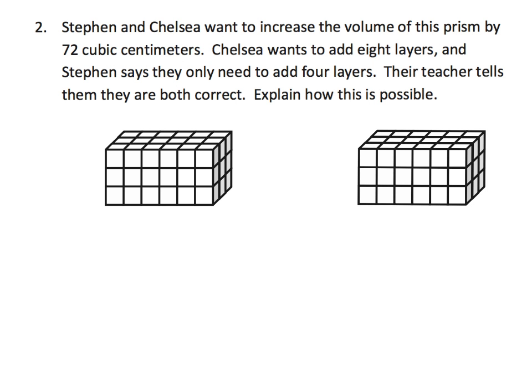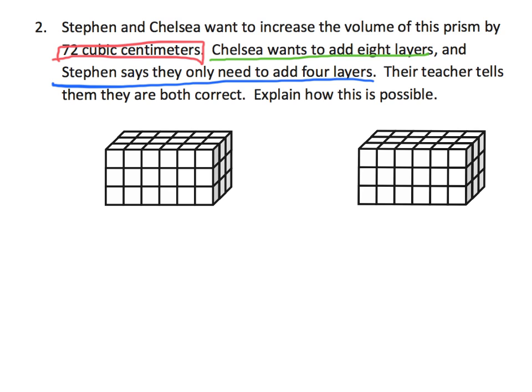On this one, Stephen and Chelsea want to increase the volume of this prism by 72 cubic centimeters. Chelsea wants to add eight layers. Stephen says they only need four layers. We have a little bit of a controversy here — four layers for Stephen and eight layers for Chelsea. But their teacher, surprisingly, says that both students are correct. How could this be possible?